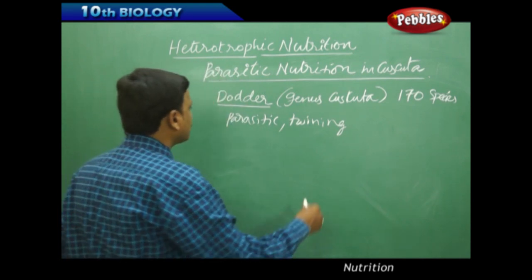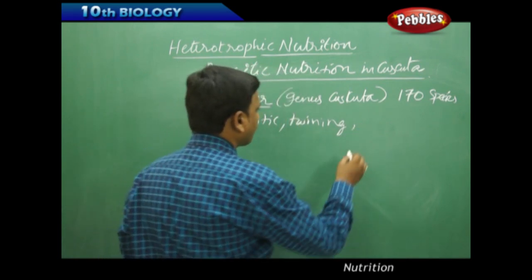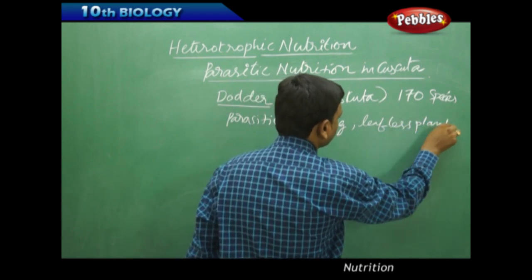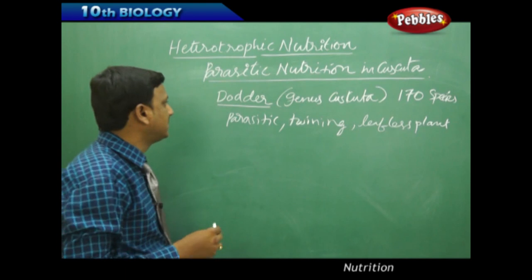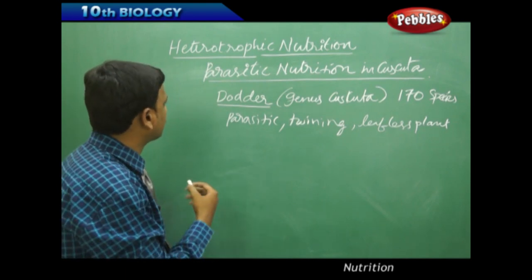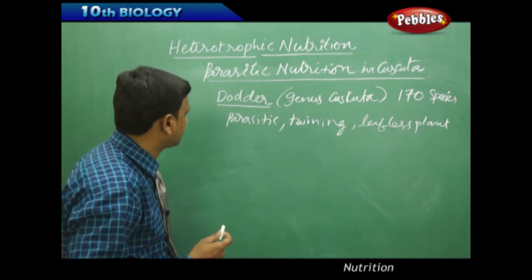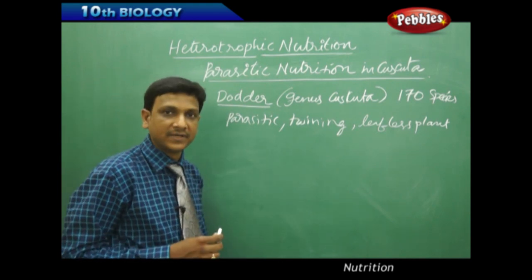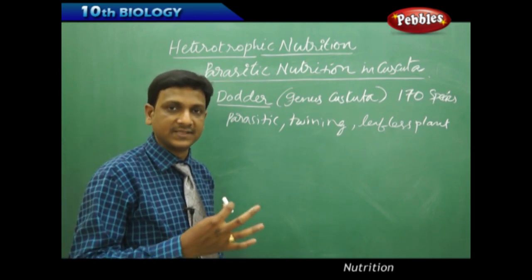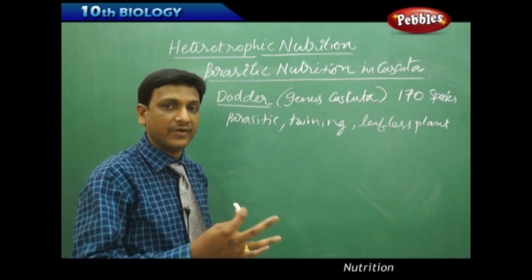This parasitic twining leafless plant - now let us see its life cycle and how its mode of nutrition works. These dodder plants are found in the temperate and tropical regions of the world. These parasitic plants move from one place to another place along with their host plant.